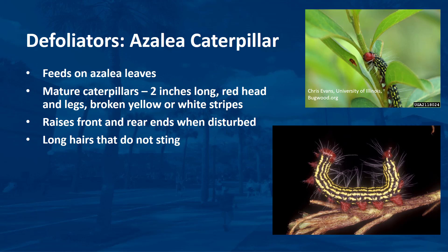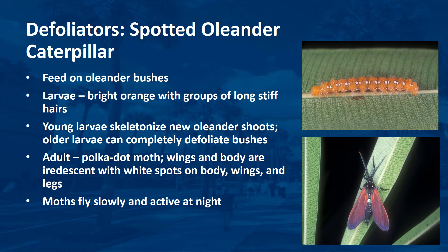The azalea caterpillar feeds on azalea leaves. Mature caterpillars are 2 inches long and have red heads and legs. Broken yellow or white stripes run the length of their bodies. When disturbed, the caterpillar raises its front and rear ends. Although it possesses long hairs, it does not sting or irritate the skin. The larvae of the spotted oleander caterpillar moth feed only on oleander bushes and are poisonous to people, birds, and small animals. The pale, cream-colored, light-yellow eggs are laid in masses of 12 to 75 on the underside of leaves. Larvae are from 3 to 40 millimeters long and are orange with tufts of stiff, reddish-brown hairs emerging from spots along their bodies.